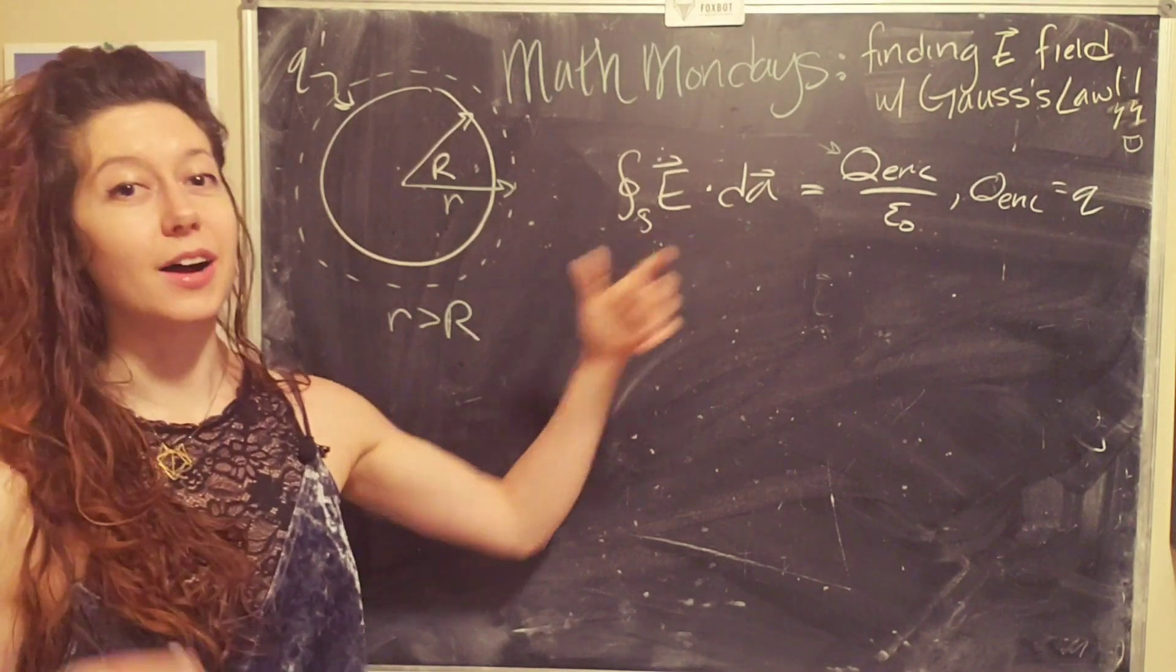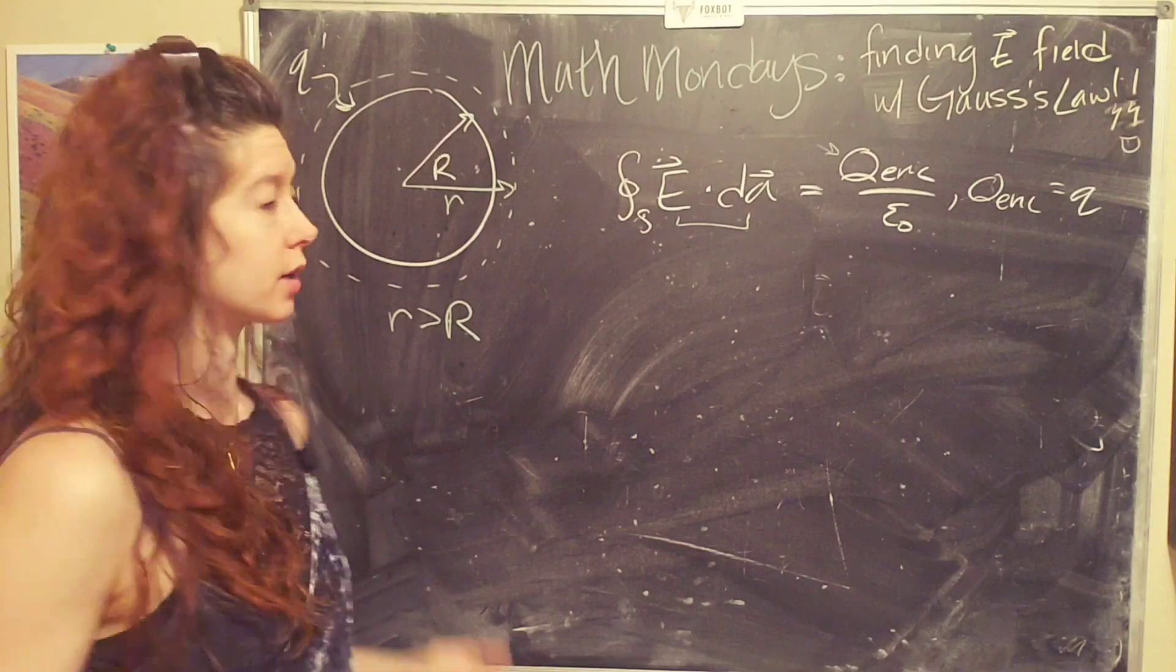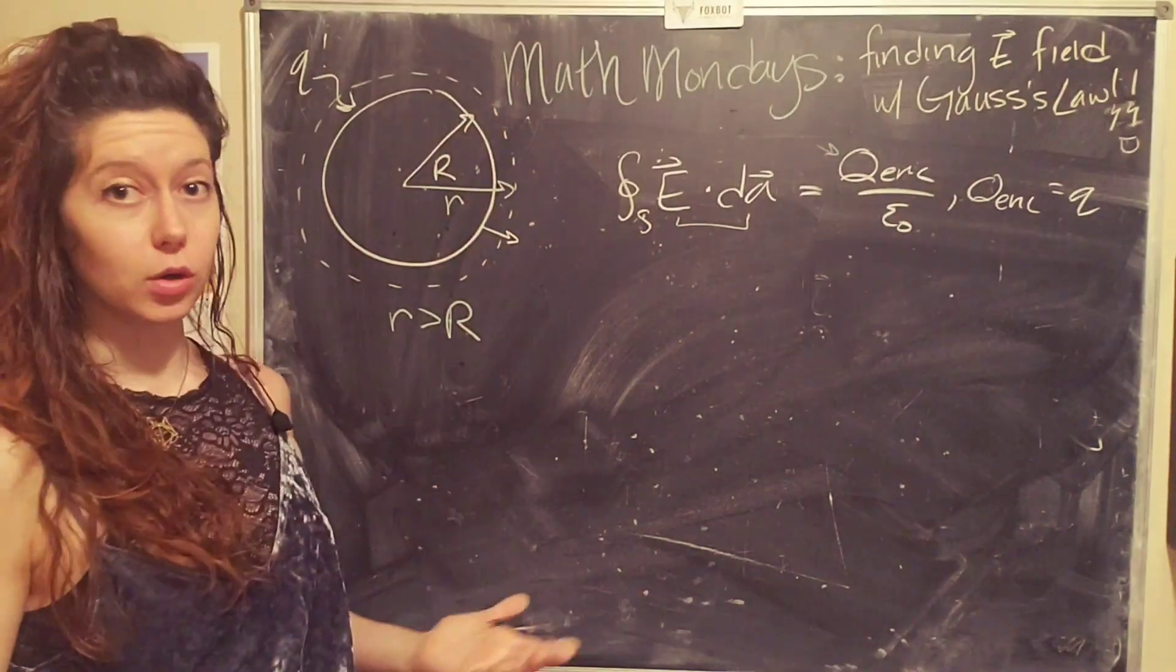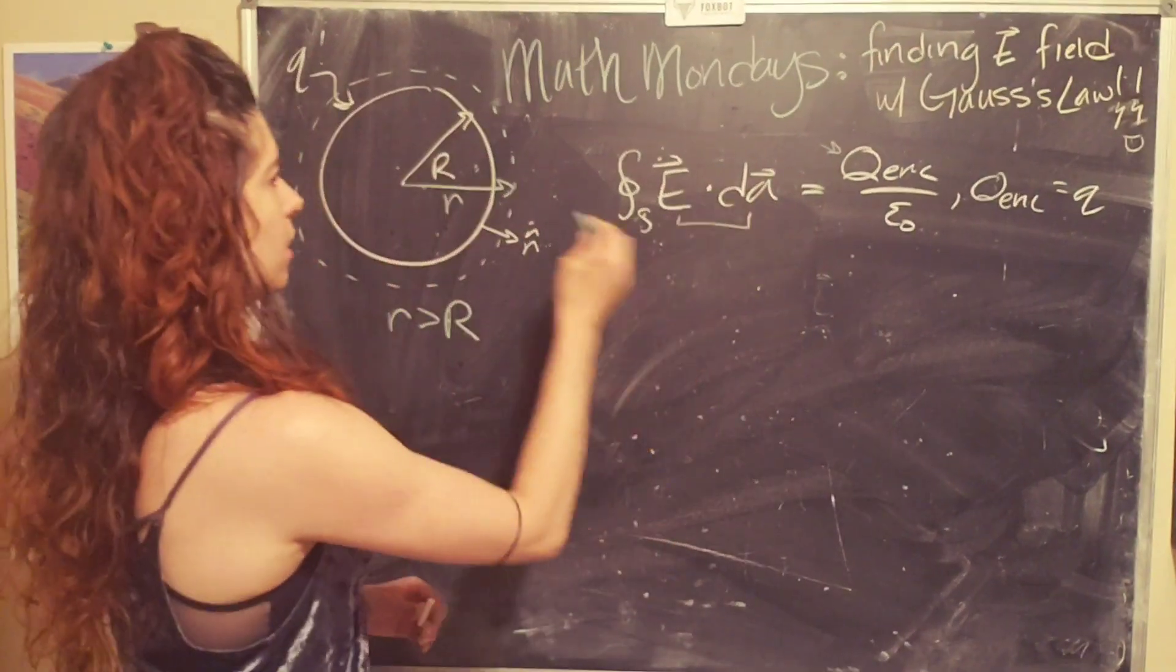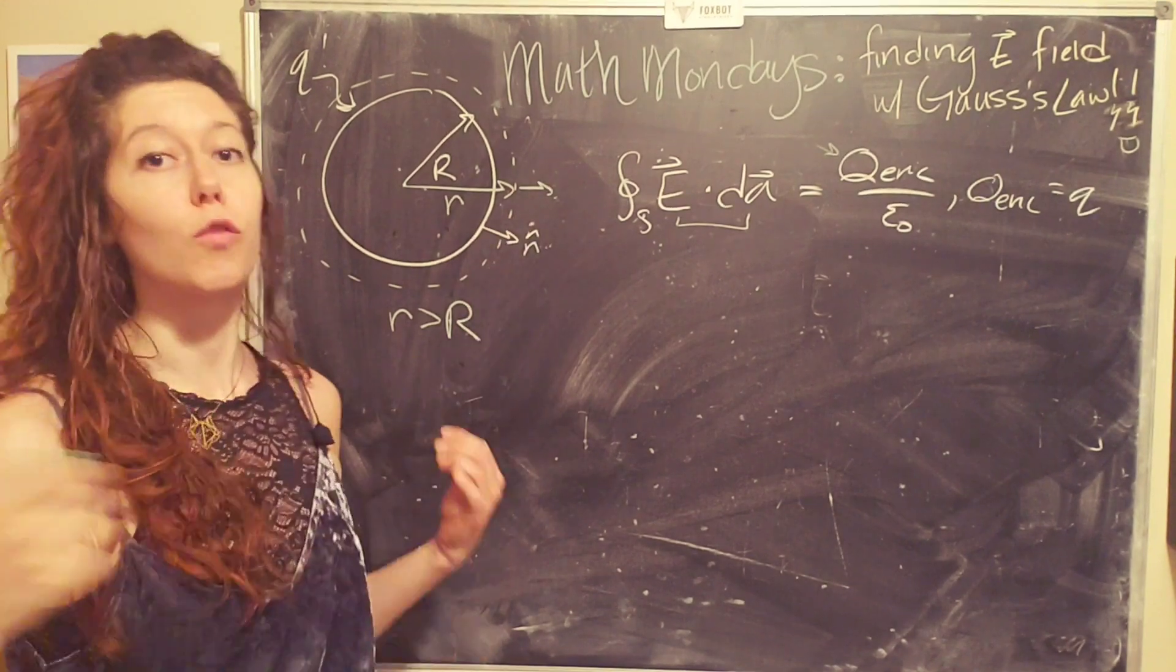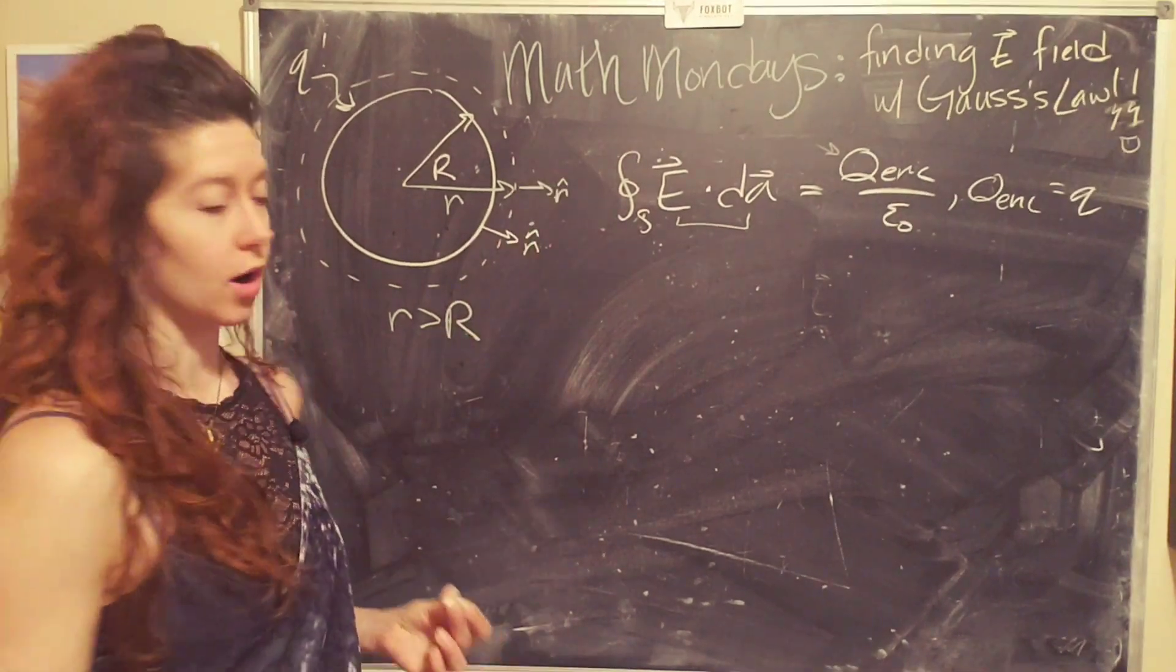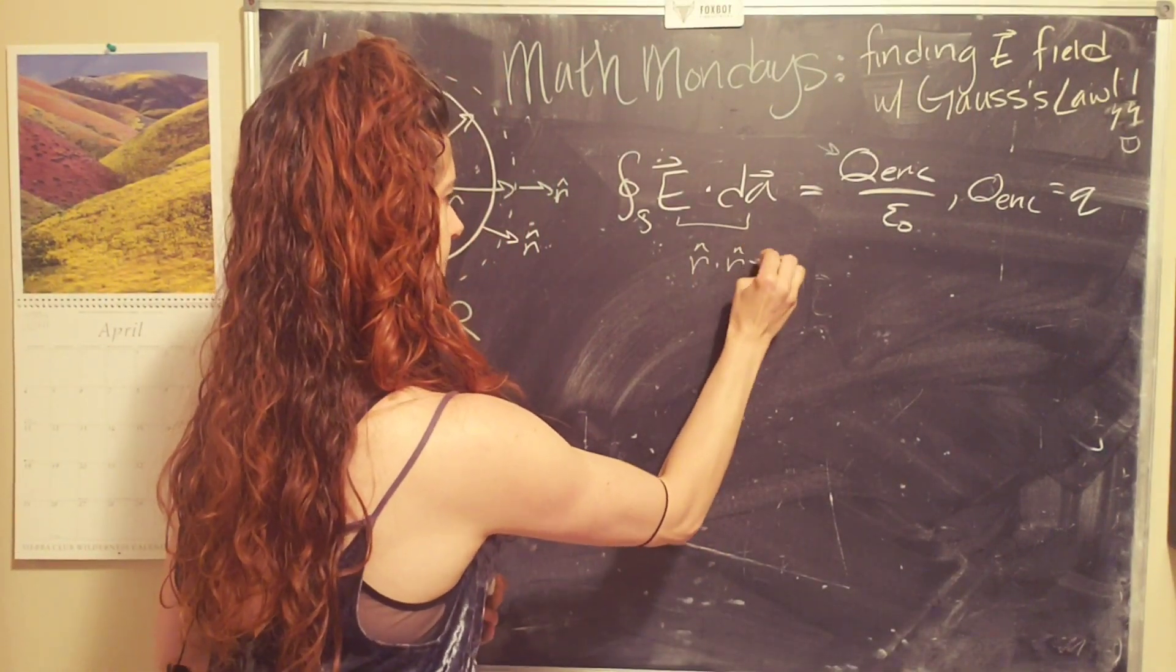All right. And then the second thing that we want to do is say, okay, well, what is happening with this dot product? So the direction of the electric field is radially outward in the r hat direction. And the direction of dA over a sphere of constant radius is also in the r hat direction. And r hat dot r hat is just one.